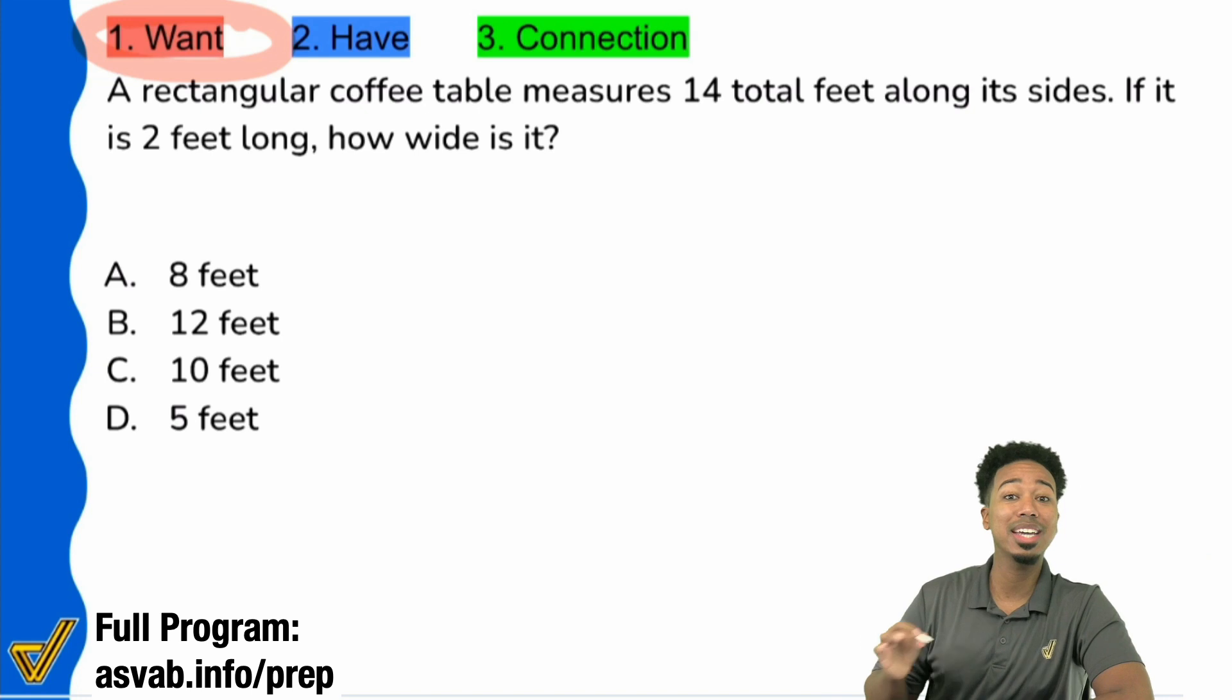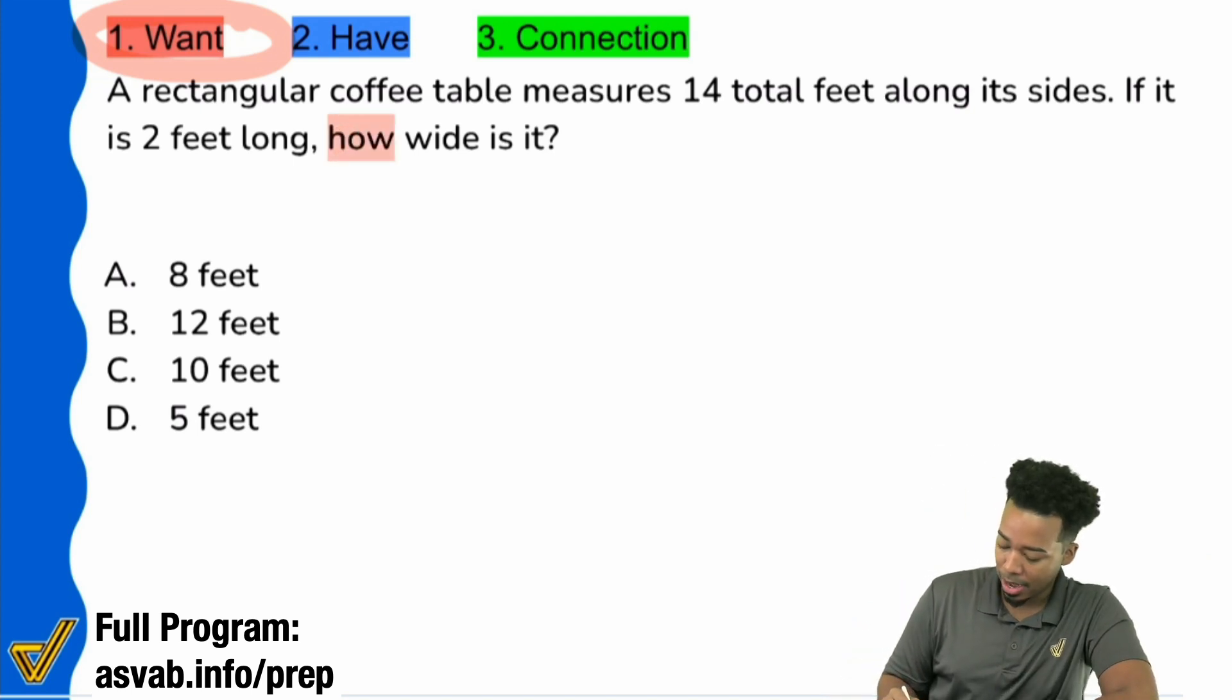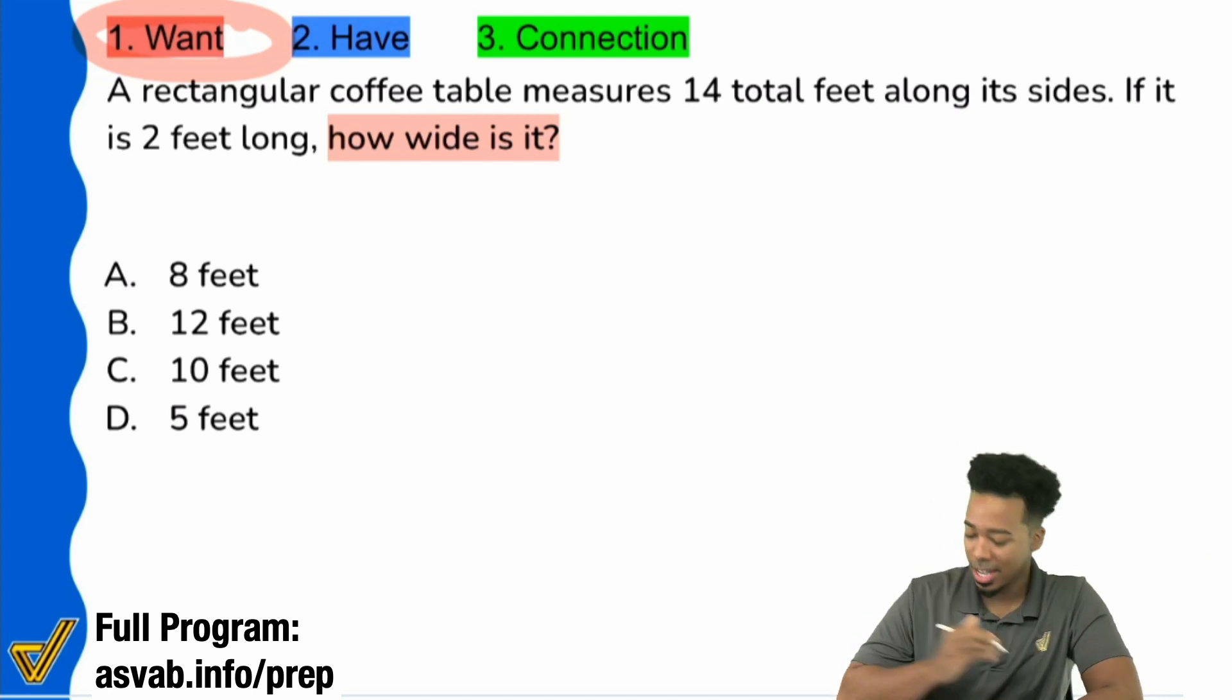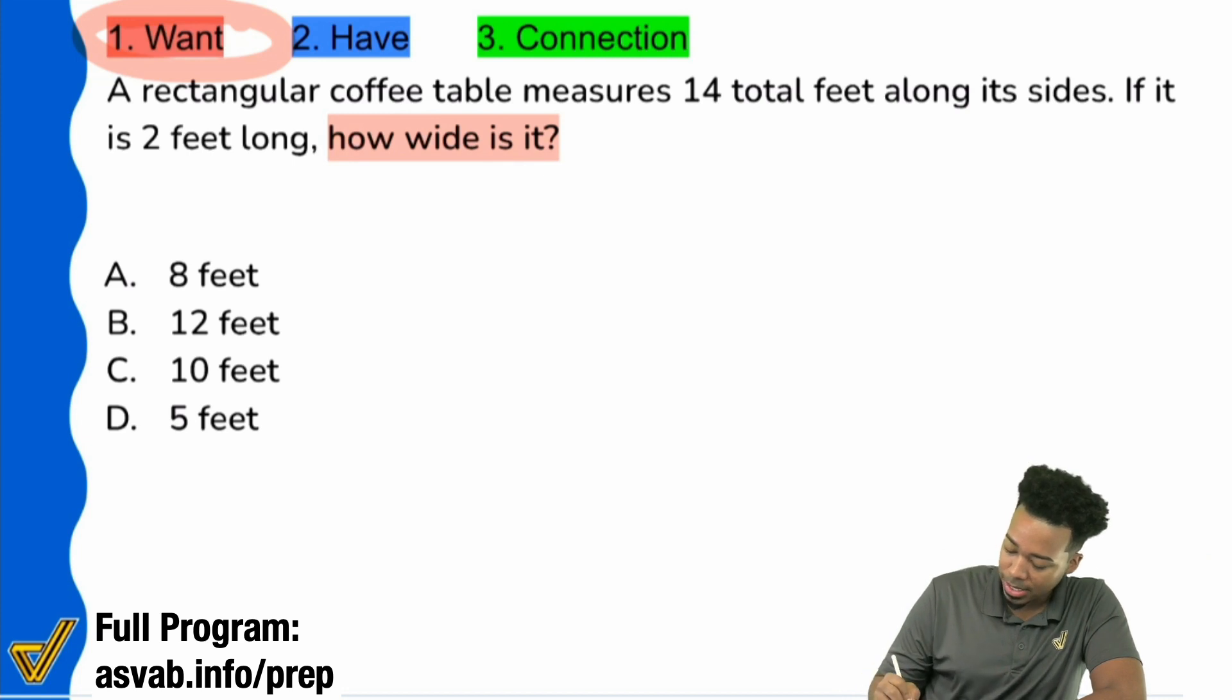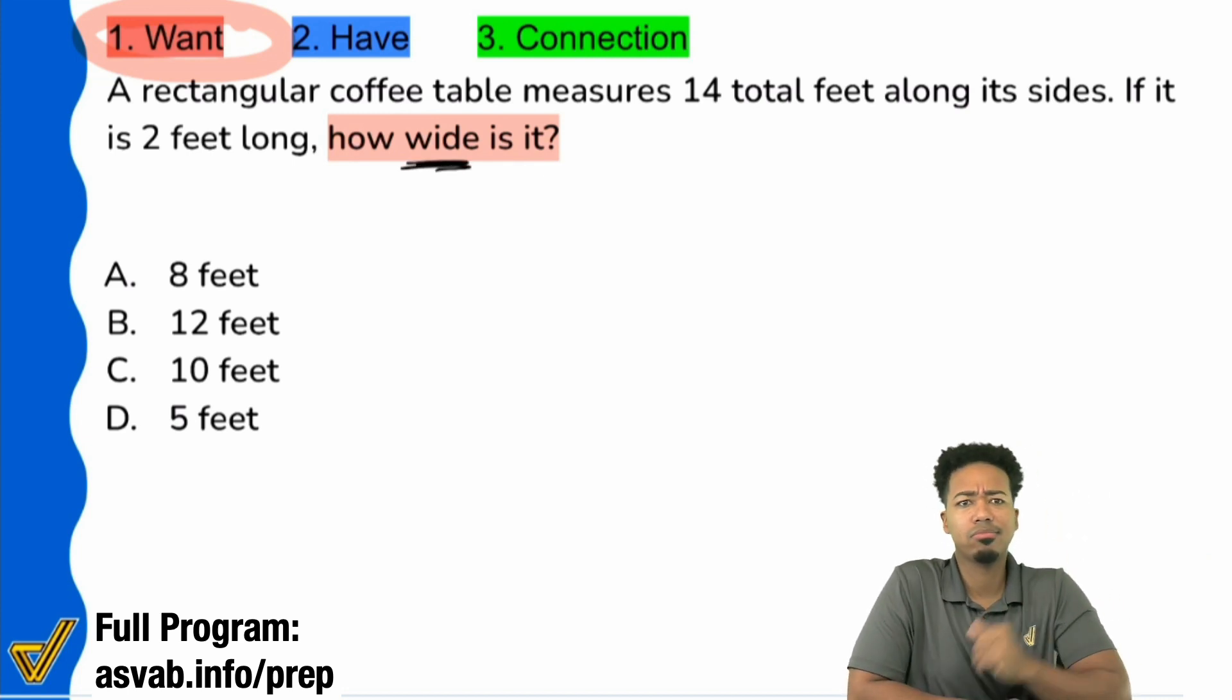I'm only going to highlight the phrase of the entire problem that is basically identifying the question: who, what, when, where, why, how many, which are the following. All of those are question action words. It's right here: how wide is it? That's all you care about right there in the beginning. Start with those question action words, and what you see is that we're looking for how wide something is.